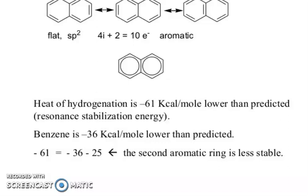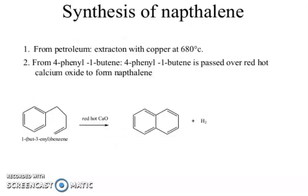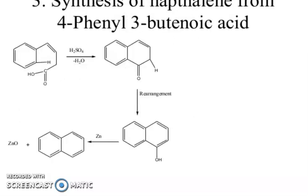Synthesis of naphthalene. From petroleum: extraction with copper at 608–80°C. From 4-phenyl-1-butene: passed over red-hot calcium oxide to form naphthalene. From 4-phenyl-3-butenoic acid: with sulfuric acid, remove water, then hydrogenation, then in the presence of zinc, zinc oxide is formed, yielding naphthalene.